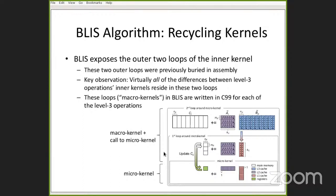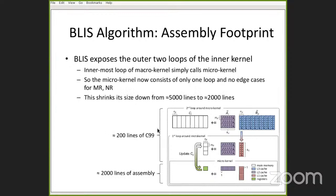The outer two loops that were once buried in assembly code in the Goto approach have been factored out of the assembly region and expressed in regular C code. It turns out that virtually all of the differences between the level 3 operations existed within these two loops. By factoring them out into C99, we no longer need different assembly kernels for different level 3 operations. Our microkernel has shrunk down to about 2,000 lines of assembly, whereas before it was about 5,000. The two factored-out loops are only about 200 lines of C, including whitespace and comments. The microkernel consists of only one loop and no edge cases.